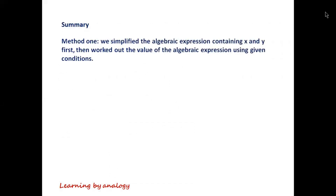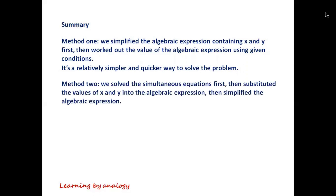In summary, in Method 1 we simplified the algebraic expression containing x and y first, then worked out the value using the given conditions. It is a relatively simpler and quicker way to solve the problem. In Method 2, we solved the simultaneous equations first, then substituted the values of x and y into the algebraic expression and simplified. Relatively, it takes more time to solve the problem this way.